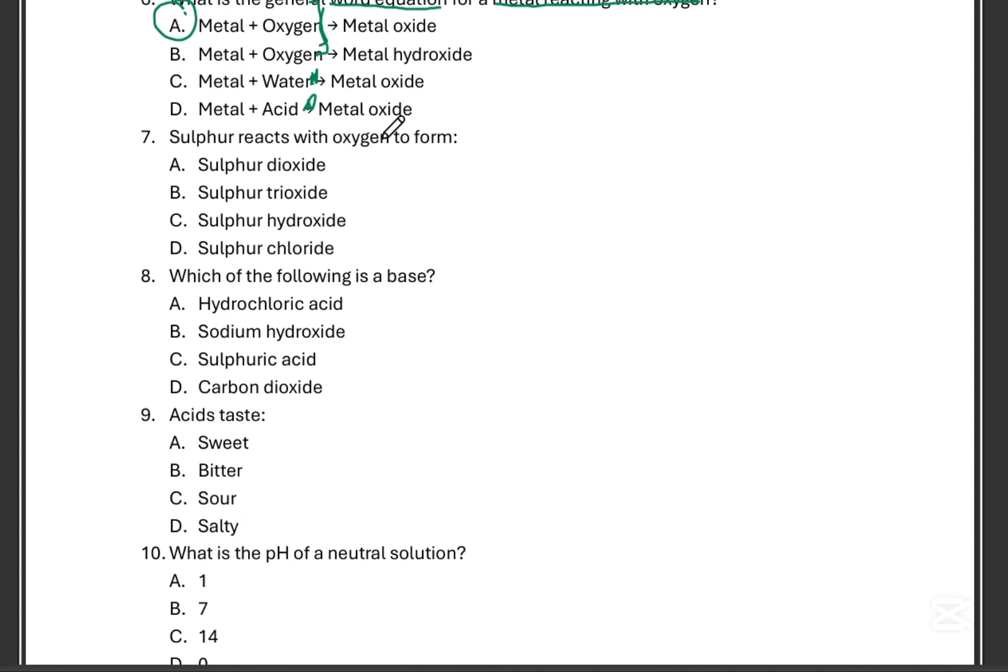Sulfur reacts with oxygen to form what? Now you already understand. Seven is A, sulfur dioxide. Sulfur reacts with oxygen, it will form a sulfur dioxide, not a chloride, definitely not a hydroxide, definitely not a trioxide. It will be a dioxide guys because of the SO2 at the end. So we'll have this reaction as sulfur reacting with oxygen. Since it's a diatomic element, then we have SO2, so dioxide.